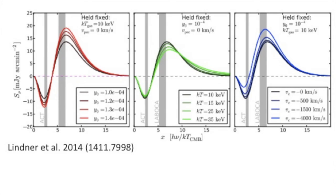That may sound small, but it can explain about one-quarter of the observed scatter in cluster masses in SZ cluster surveys — so, relatively speaking, it's an important effect to take into account. The uncertainty due to the cluster's peculiar velocities is approximately the same amplitude, a few percent.